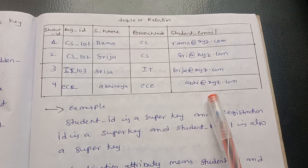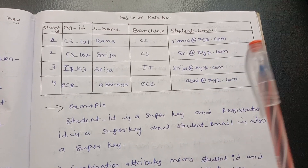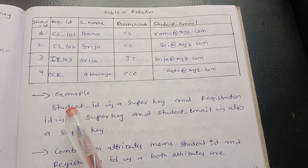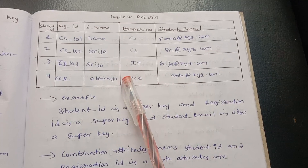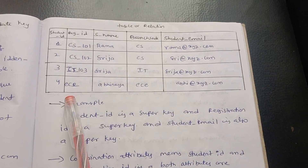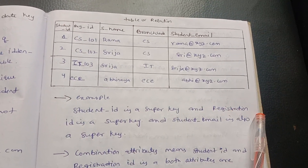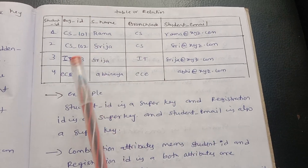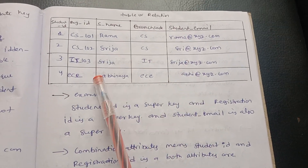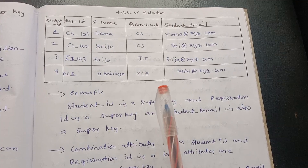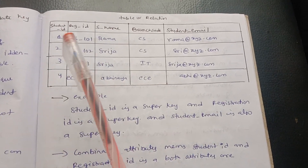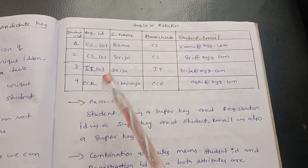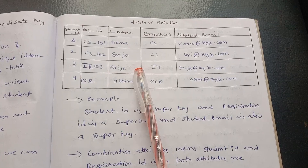Here we have a table with rows and columns. We have attributes like student ID, email ID, registration ID, name, and class. Student ID alone can be a super key, and registration ID alone can also be a super key.